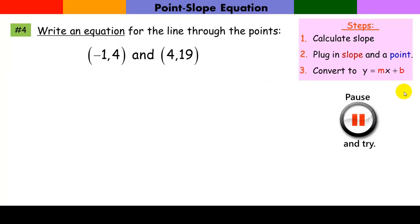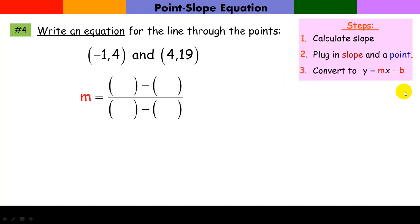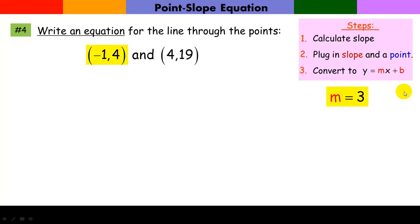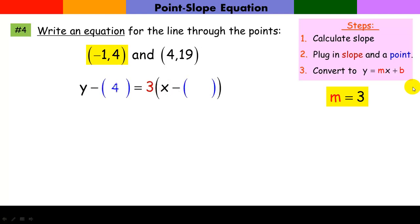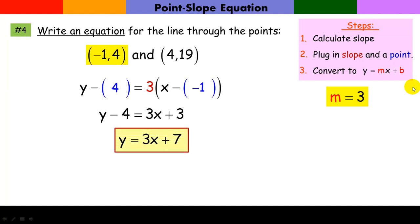Let's try another one. Calculating the slope — plug in one point, plug in the other — and our slope is 3. Taking that slope and selecting the first of the given points (either one would work equally well and give the same result), plug in the slope and the point, and you should get y equals 3x plus 7.